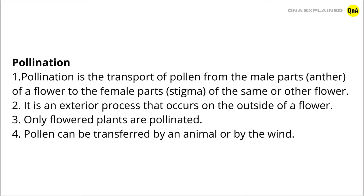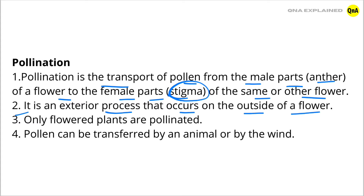Let's see about pollination. Pollination is the transport of pollen from the male parts, the anther of a flower, to the female parts called the stigma of the same or other flower. It is an exterior process that occurs on the outside of a flower. Only flowering plants are pollinated. Pollen can be transferred by an animal or by the wind.